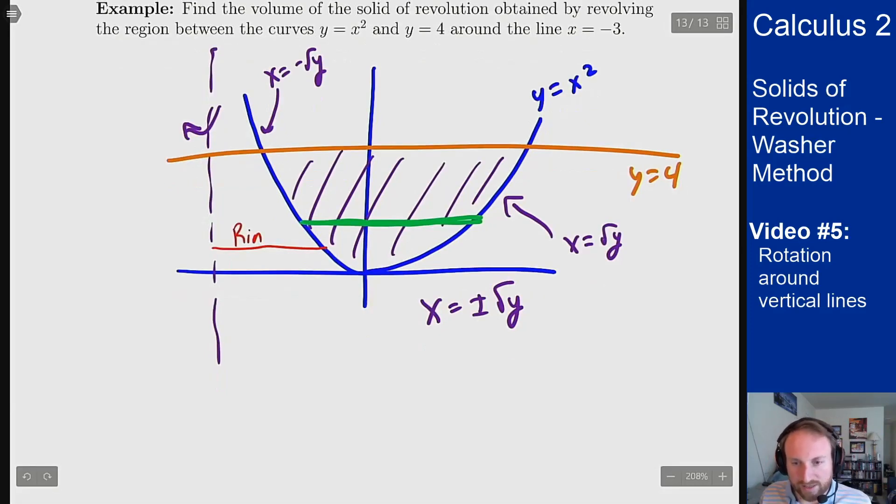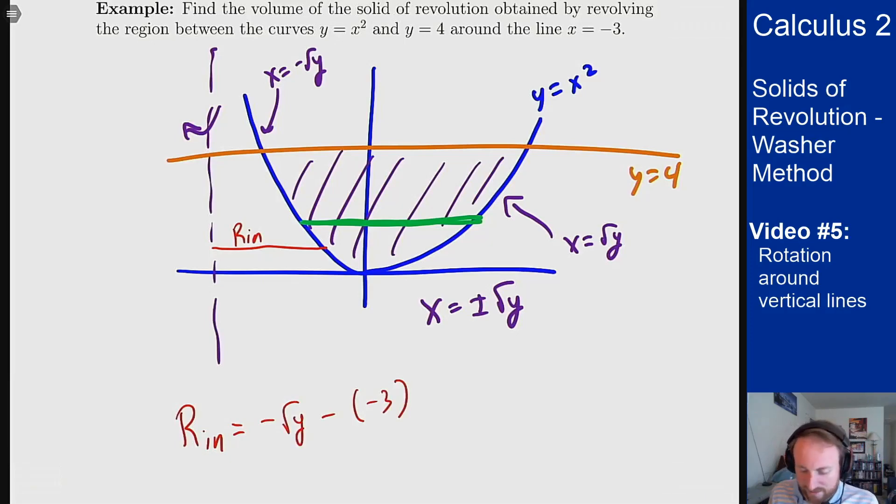So my inner radius here is going to be minus square root of y and then minus negative 3. The distance between negative square root y and minus 3 is this here, which is 3 minus square root of y. A positive number on this range, so we're good.